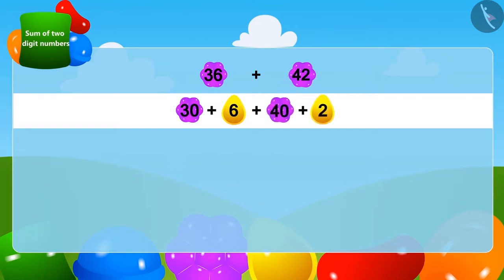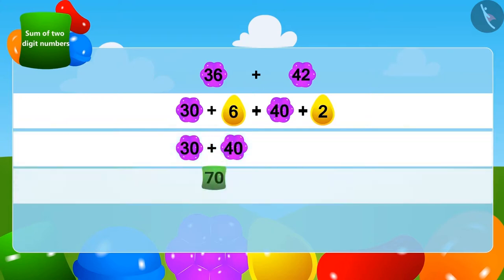We will now write the two digit numbers together and add them. Add 30 to 40 and we get 70. We will write the one digit numbers together and add them. Add 2 to 6 and we get 8.